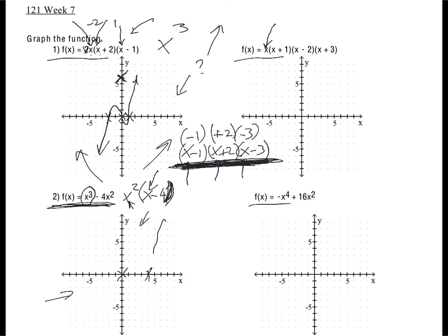To draw that, remember again it rises to the right, and don't forget it touches and turns when you've got an even amount of solutions - multiplicity two or multiplicity four. That's what that should look like.